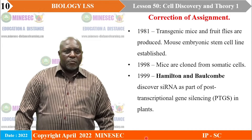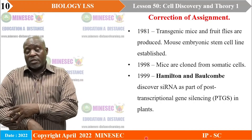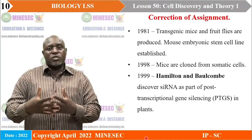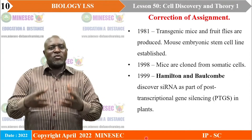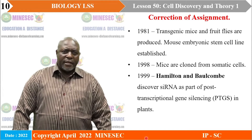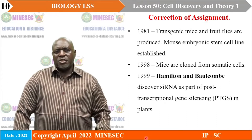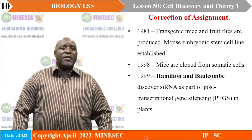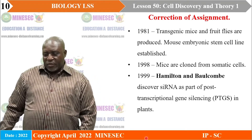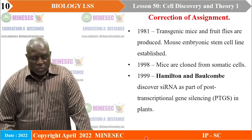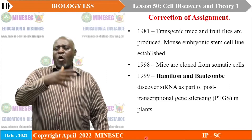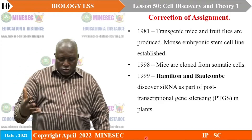In 1998, mice could be cloned from somatic cells — cells that are not germinal, not concerning the reproductive system; every cell outside the reproductive system is a somatic cell. In 1999, Hamilton and Baulcombe discovered RNA interference as part of post-transcriptional gene silencing. So at least we have given a rundown on the timeline of dates and major events that led to our understanding of cell structure and function.